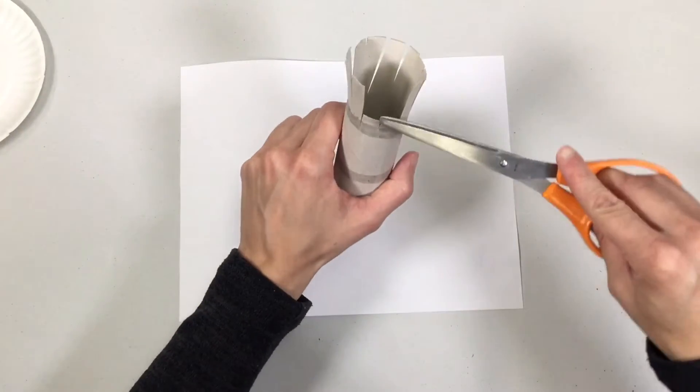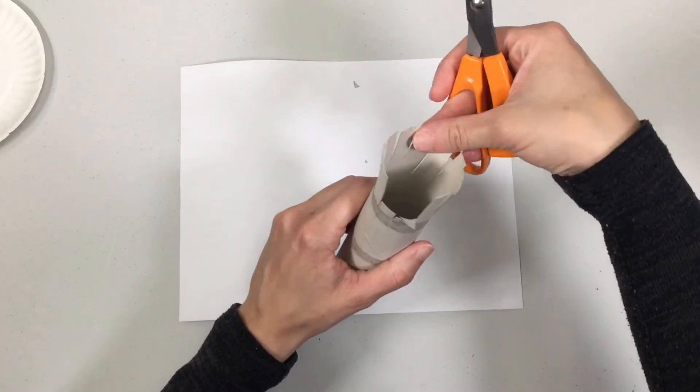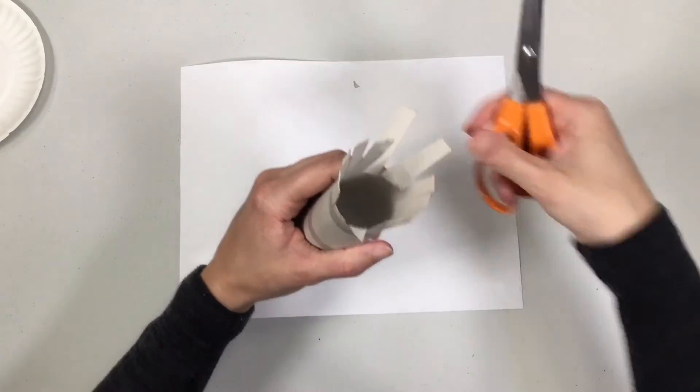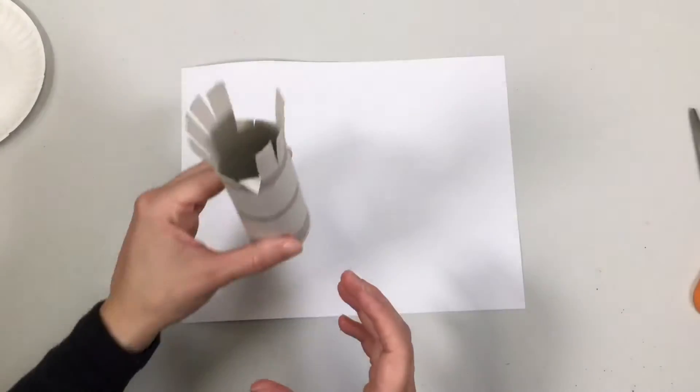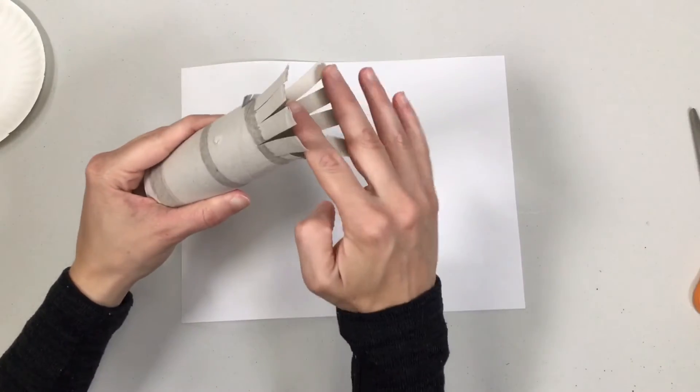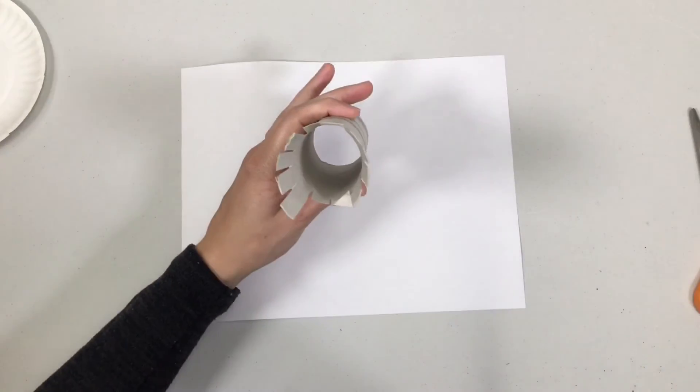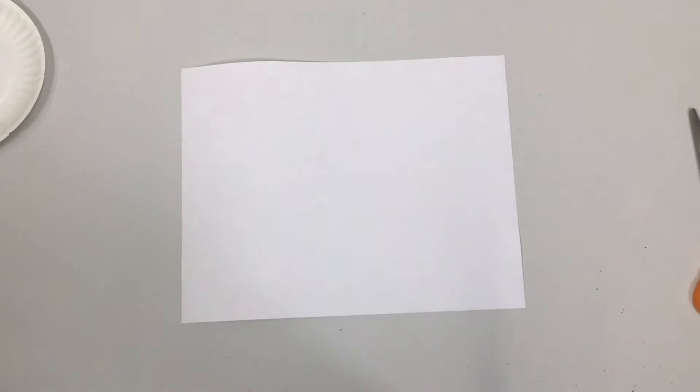So we've got two off on this side, and then right exactly across the other side we're going to take two more and cut those ones off as well. So what you should have is a tube with eight spidery looking legs on it. We'll set that aside for now.